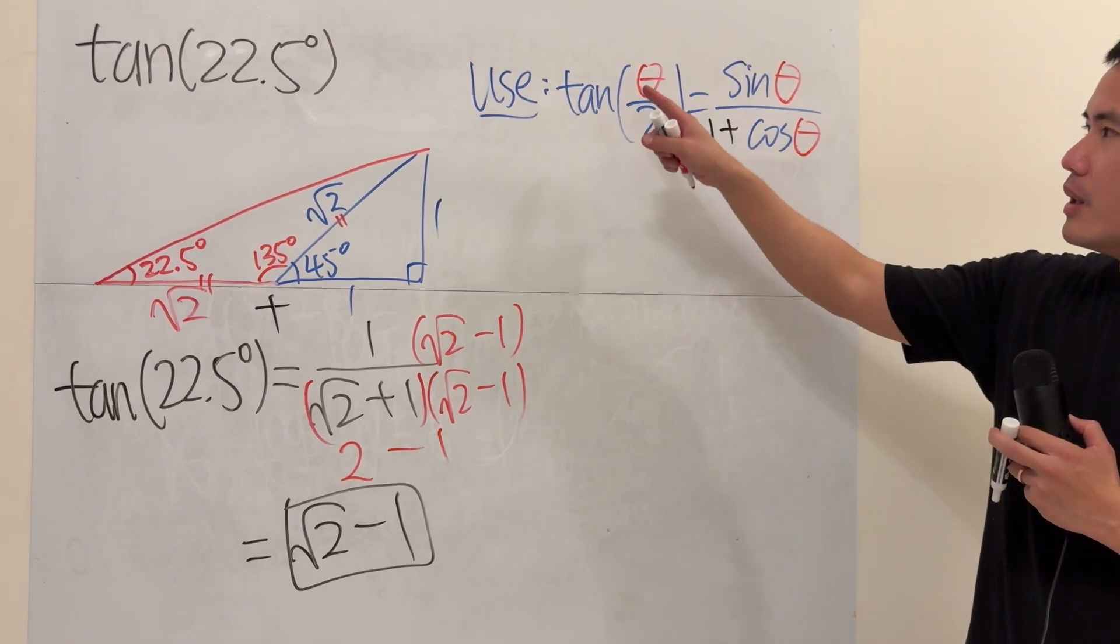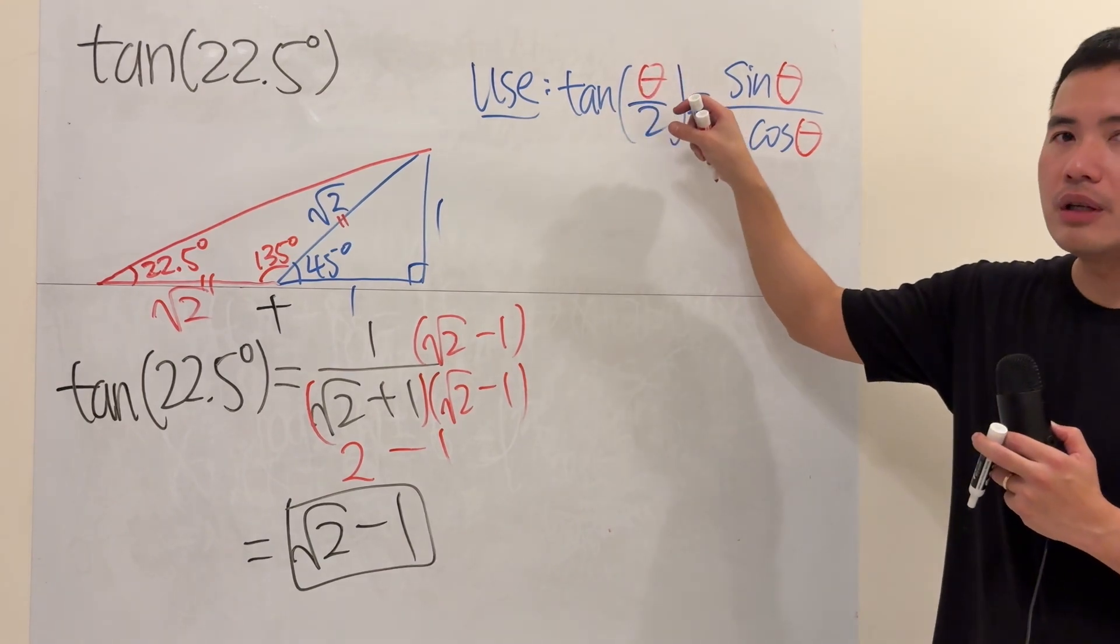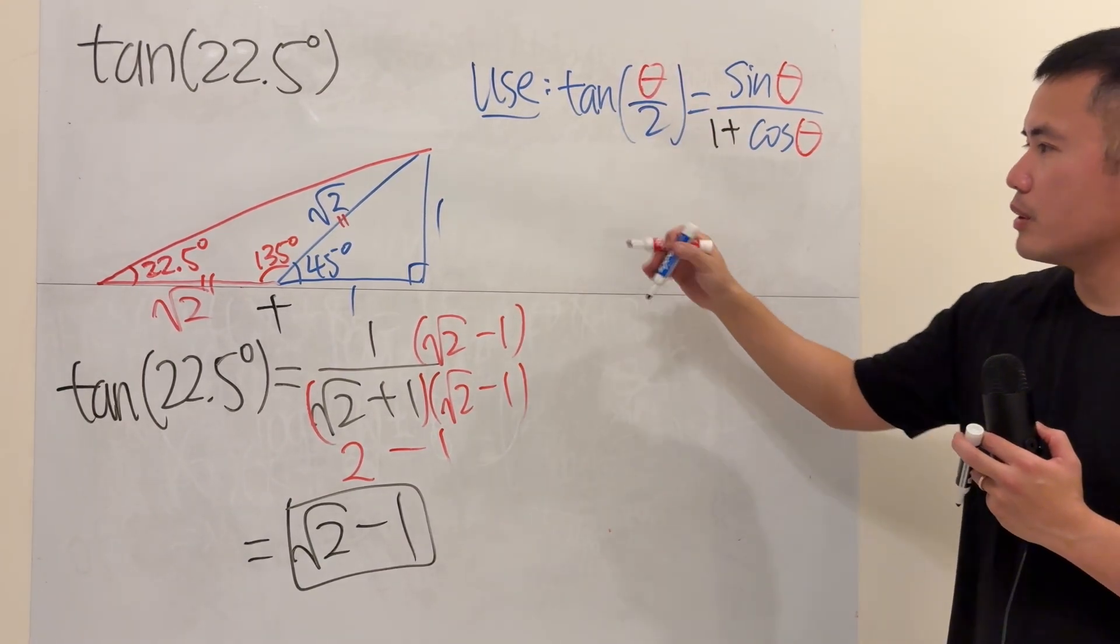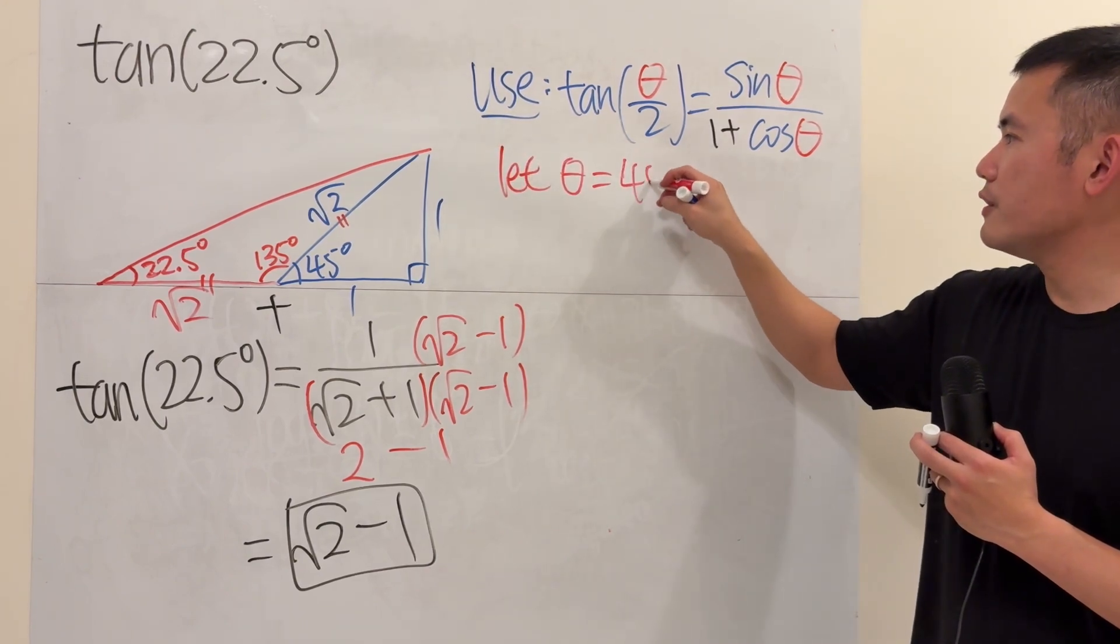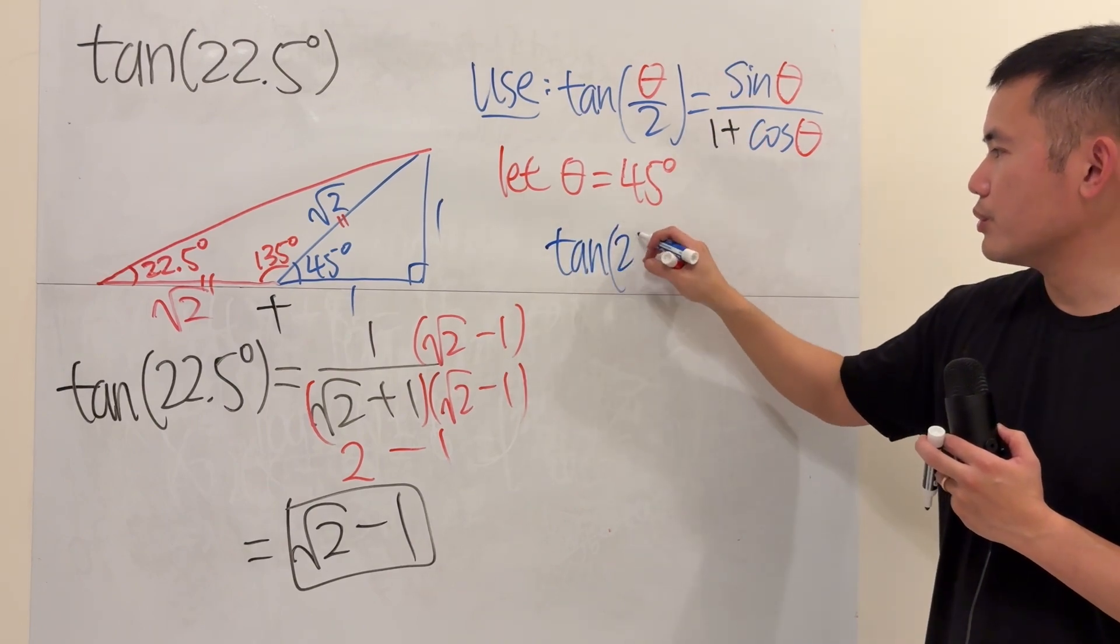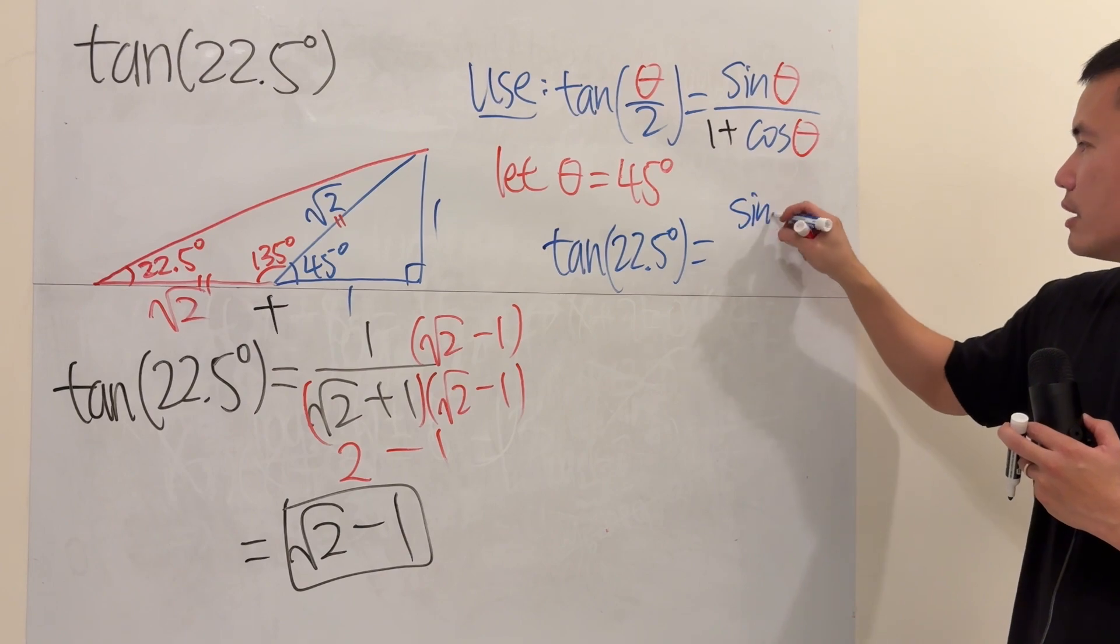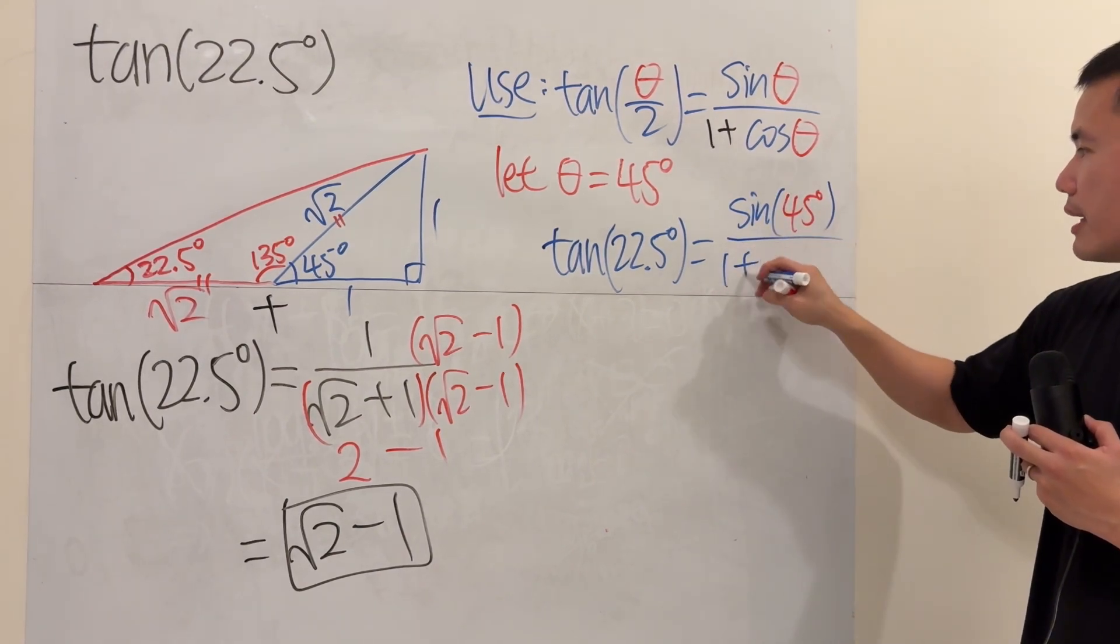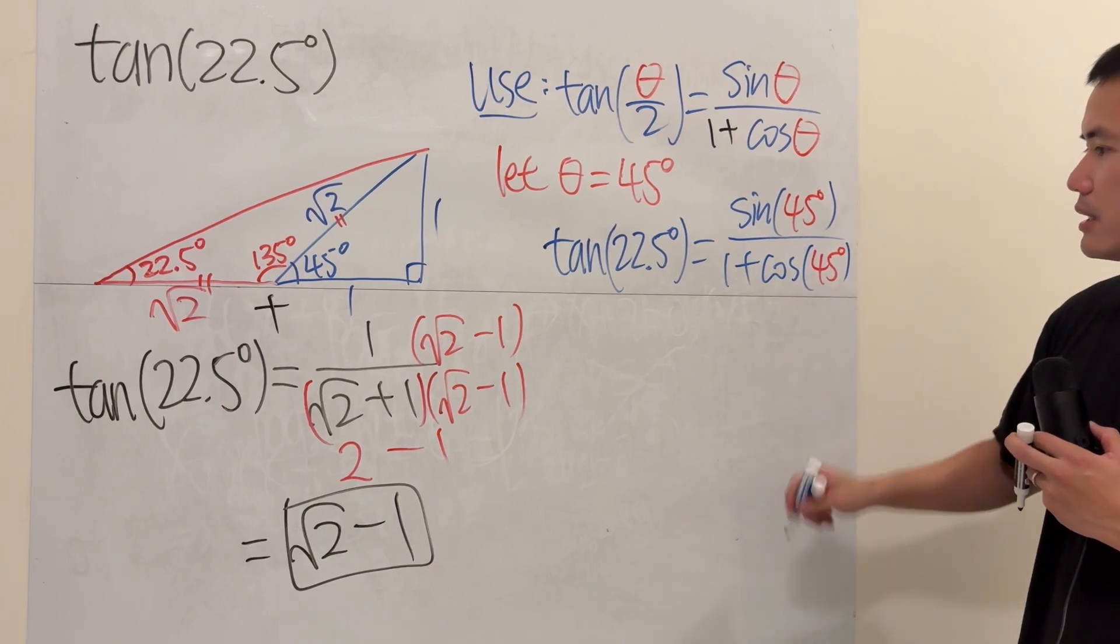Now, I need to end up with 22.5 degrees instead of tangent. So I have to put down 45 degrees. So let theta equals 45 degrees. Then we will see that tangent of 22.5 will just be equal to sine of 45 degrees over 1 plus cosine of 45 degrees.